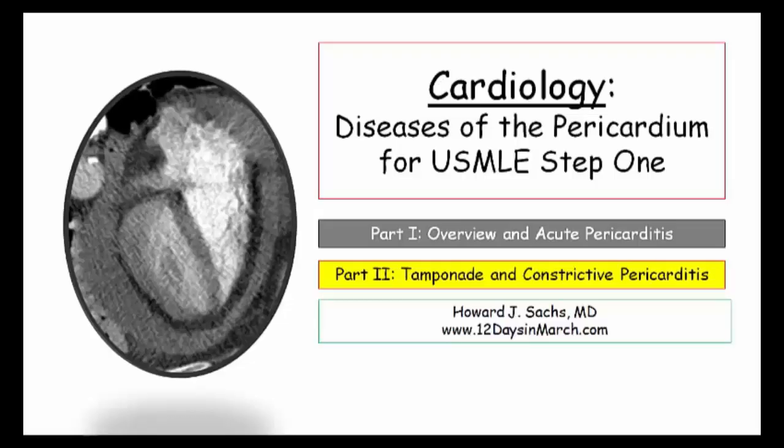Welcome back to Season 2 of 12 Days in March. In Part 1 of this two-part video series, I presented an overview of the pericardial disorders as well as a review of acute pericarditis. In this section, we will finish our presentation of pericardial disorders with a review of cardiac tamponade and constrictive pericarditis.